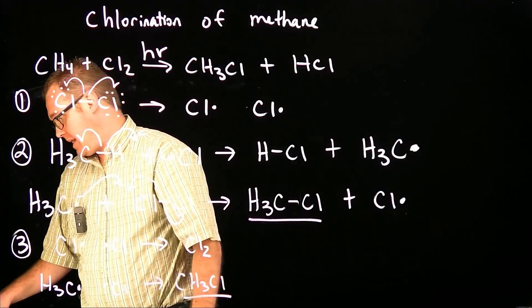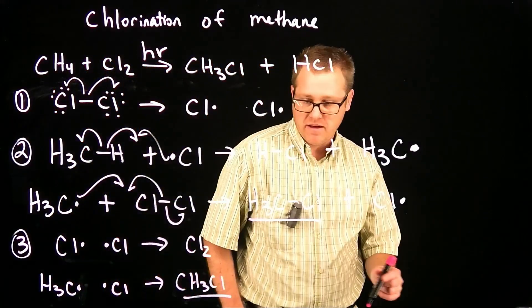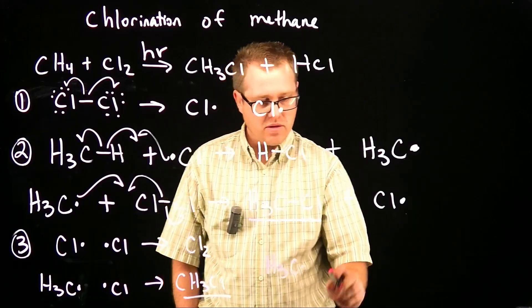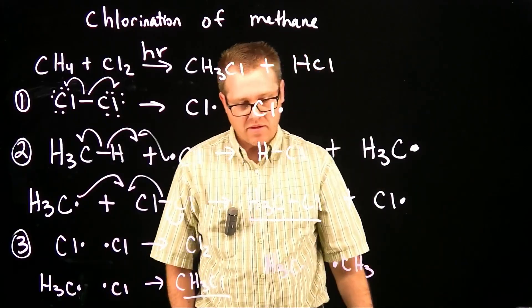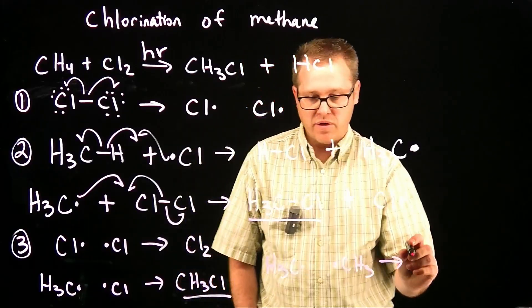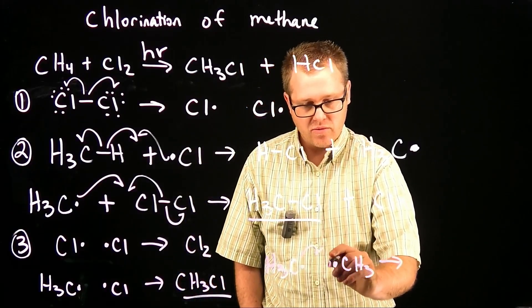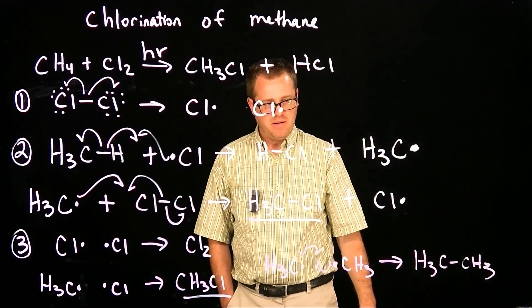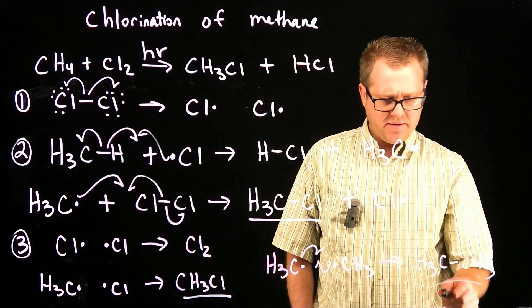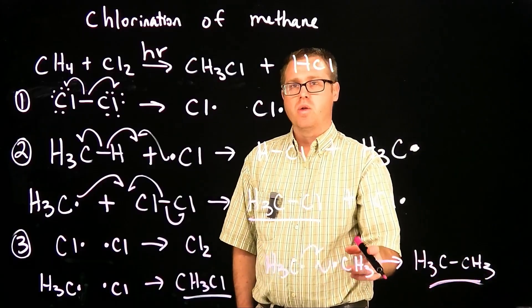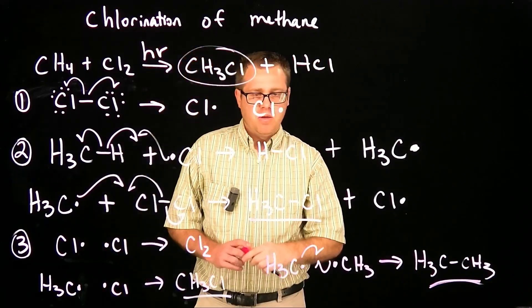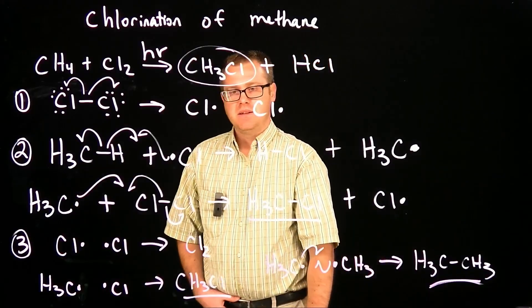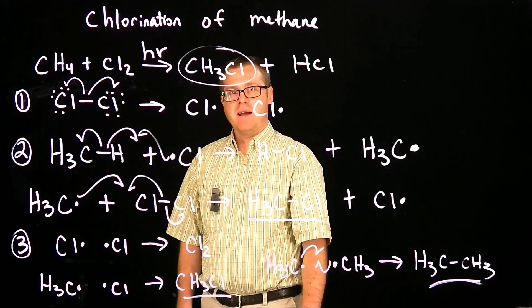Another termination step that you could envision happening. You could have a methyl radical get really close to another methyl radical. When those two species get close together, you could have them react. And then what would we generate? We would generate ethane. That would be like a side product that we're not too interested in because our whole goal was to generate this compound. But that's how the reaction can stop, is from these one, two, three termination steps. And eventually you're going to use up all your radicals and the reaction will stop.